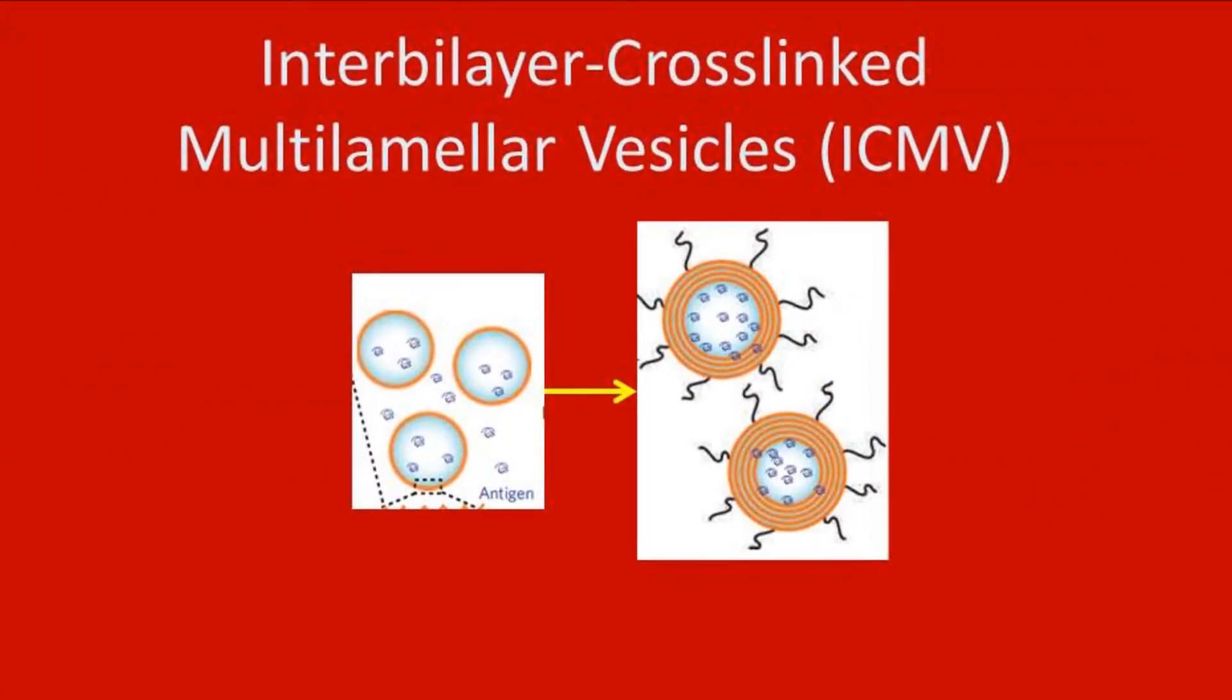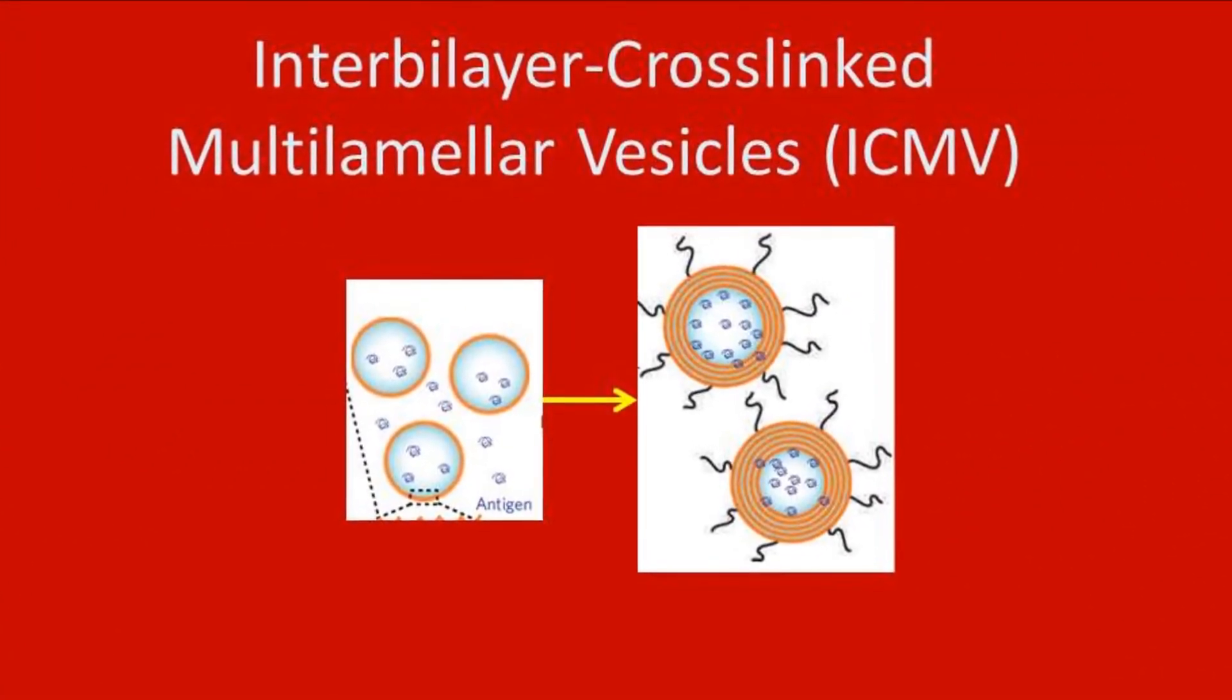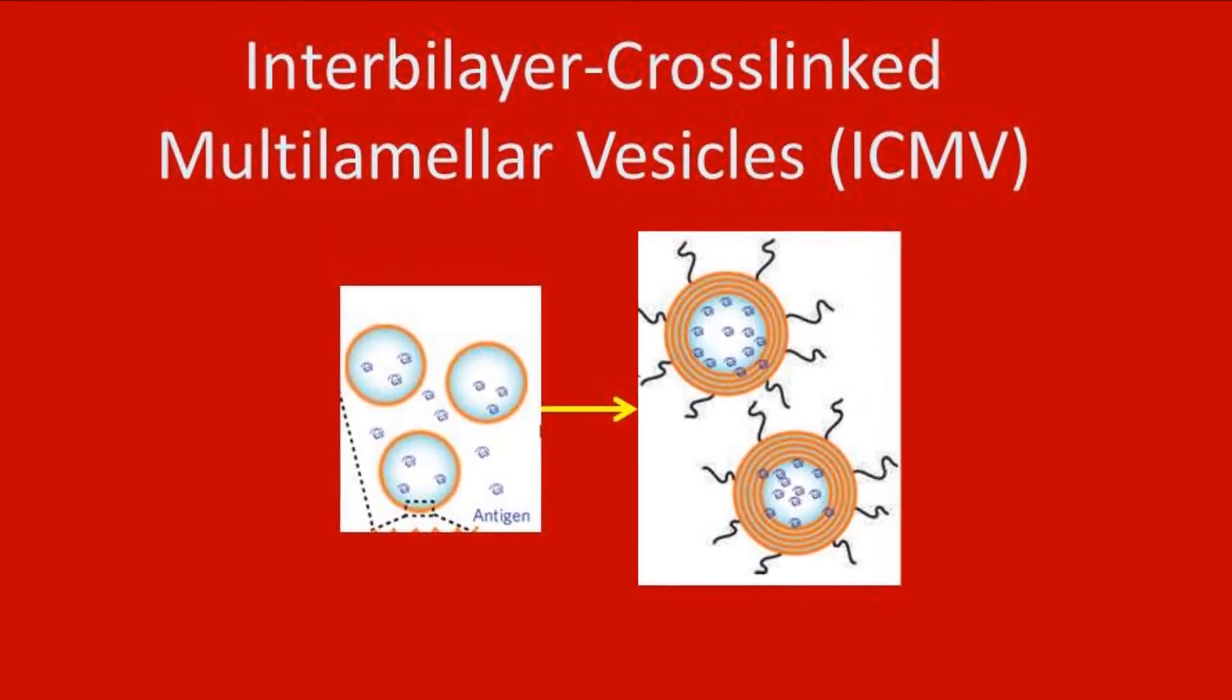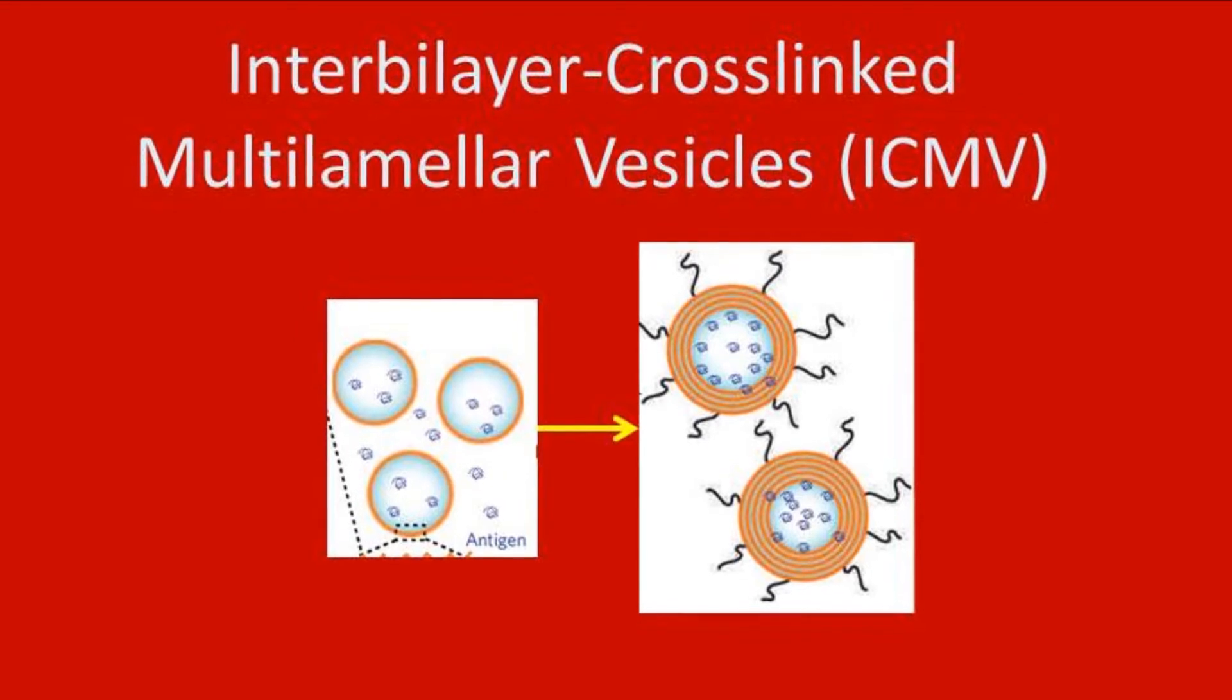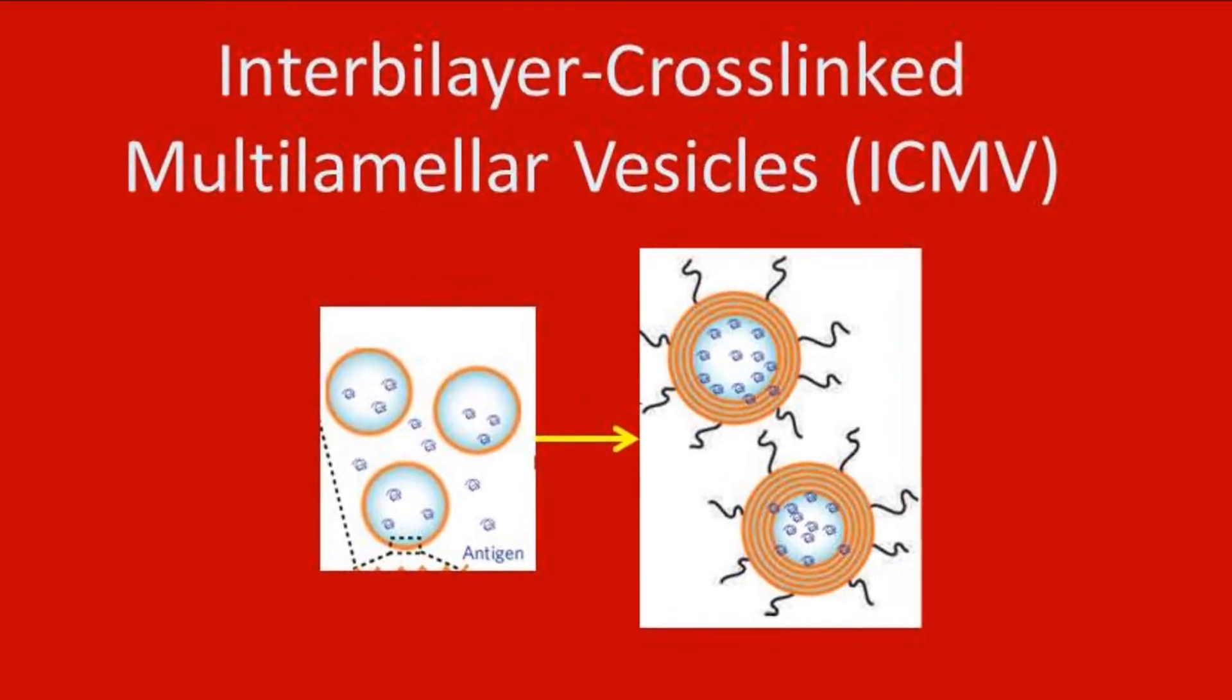Subunit vaccines contain a single or small number of proteins from a virus or bacteria, but are typically weaker than standard live virus vaccines. A way to enhance their strength is to deliver the protein encapsulated in a special liposome called an ICMV.